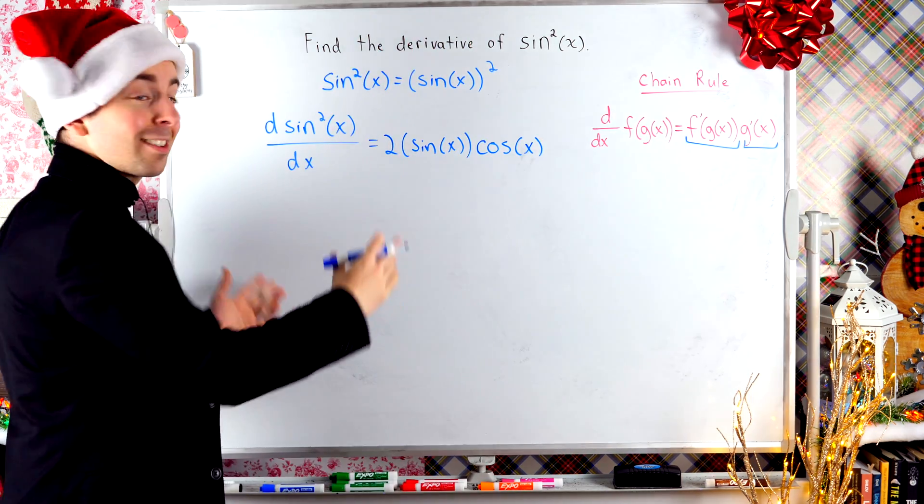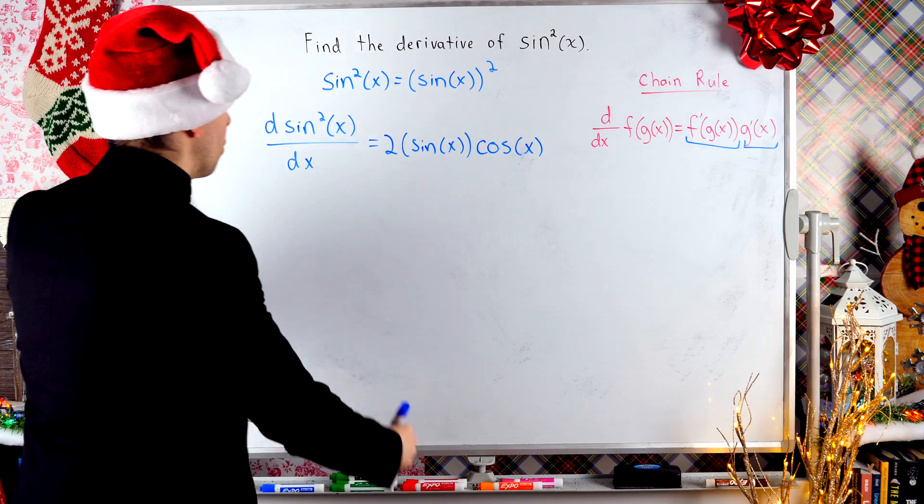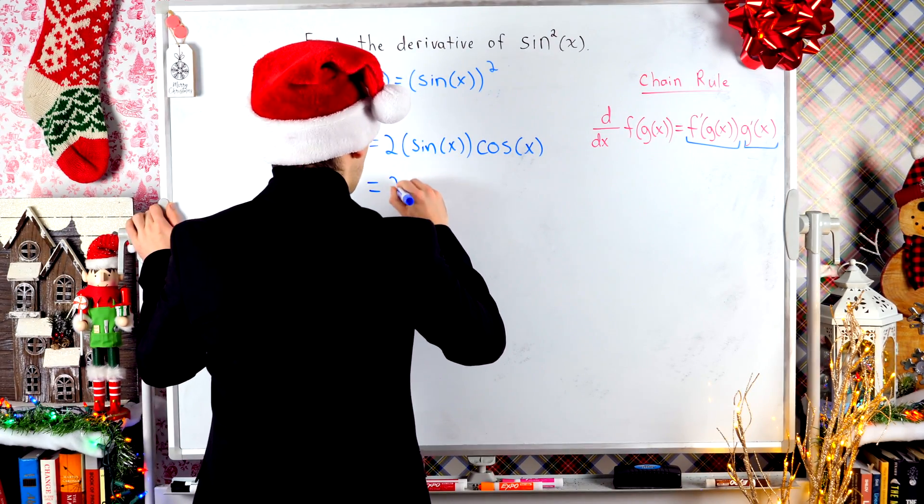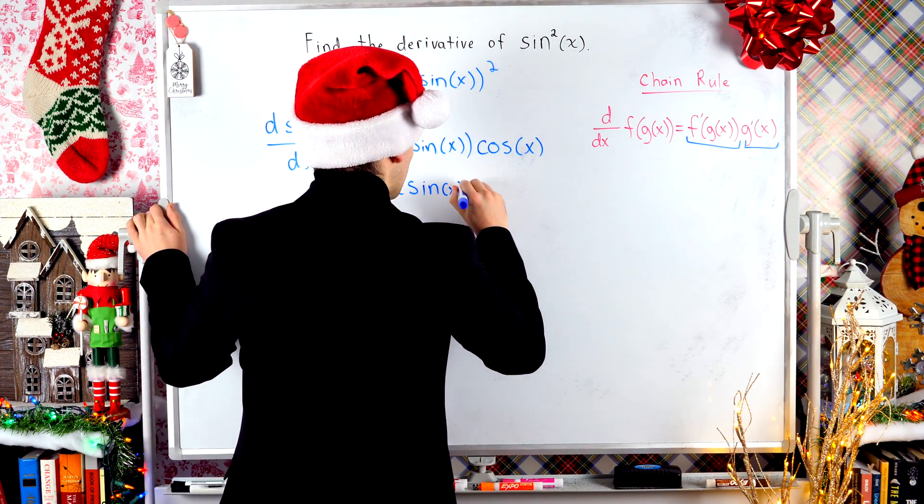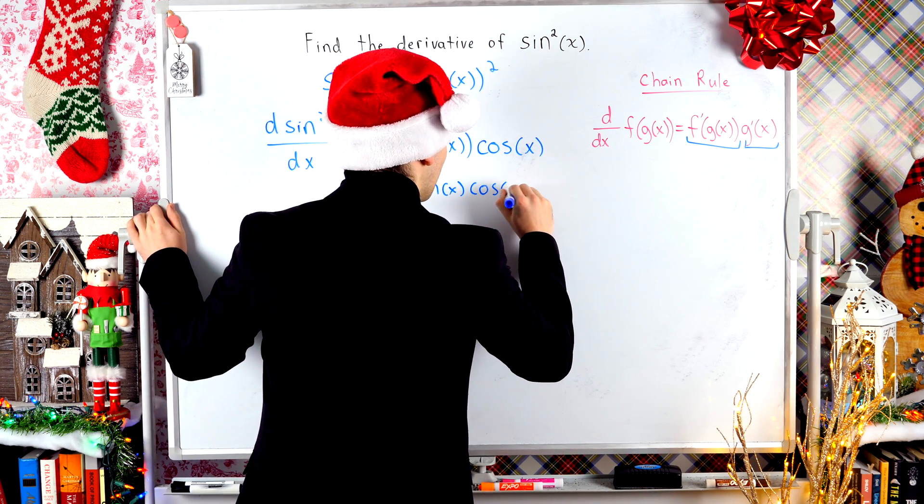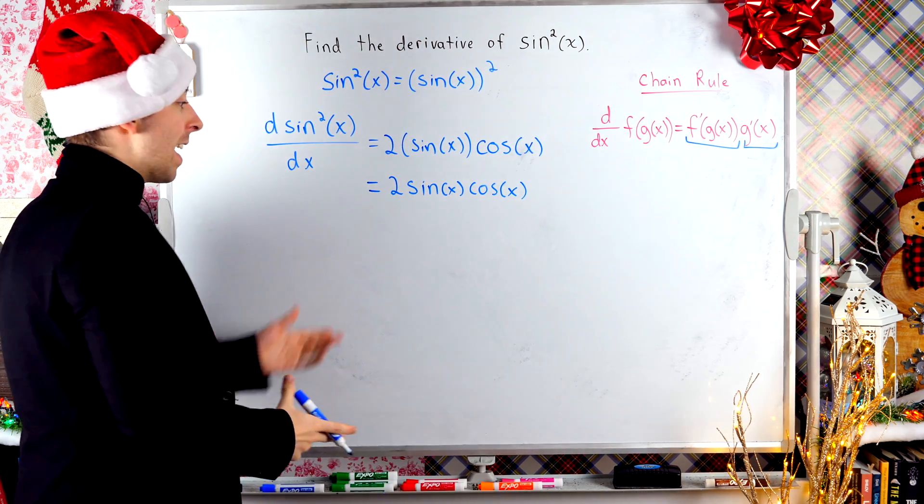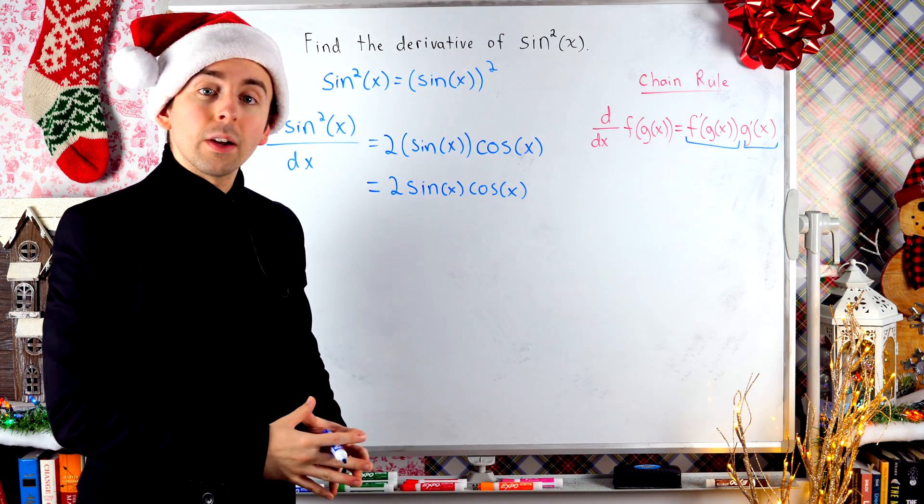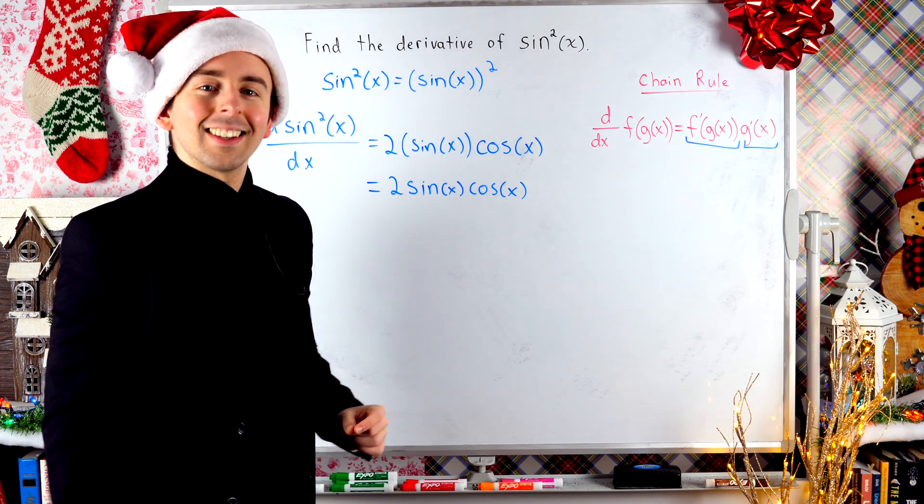And that's literally it. We're done. The derivative of sine squared of x is 2 sine of x cosine of x. And if you wanted to, you could try doing it with the product rule and you'd get the same thing.